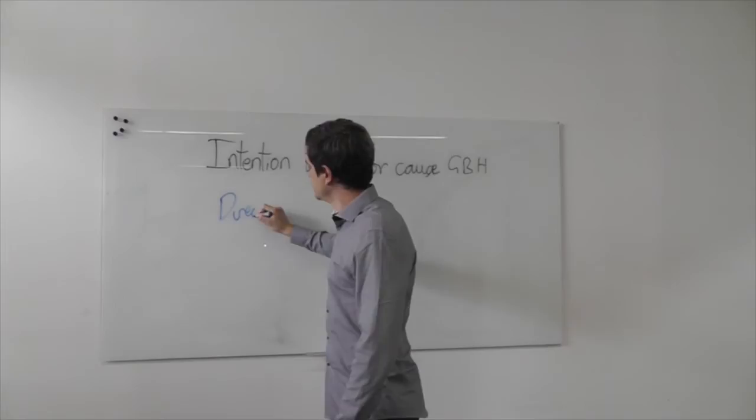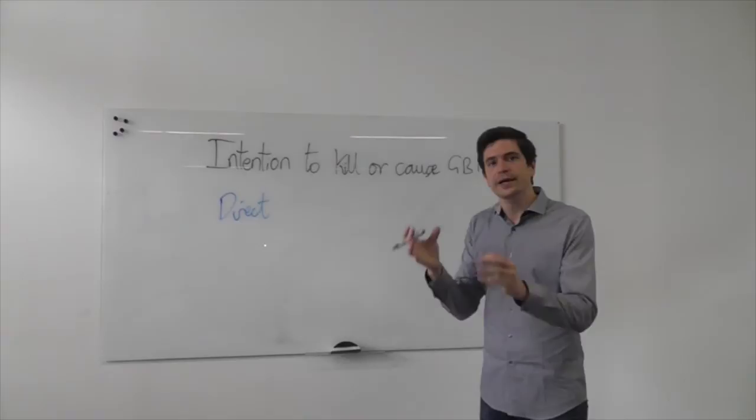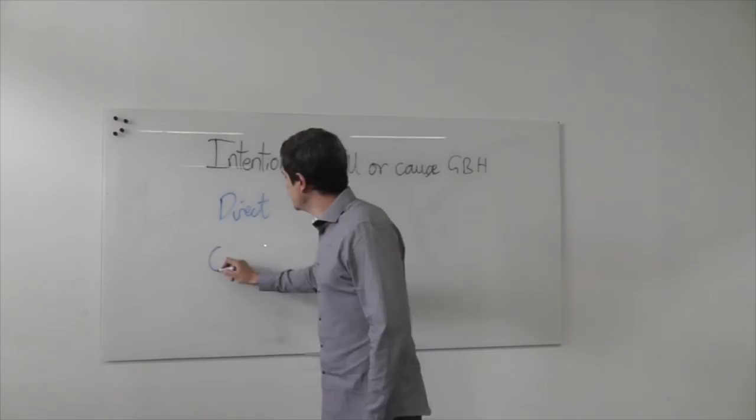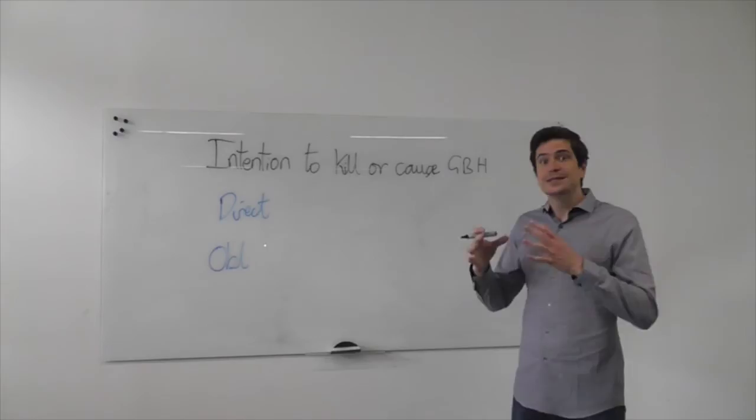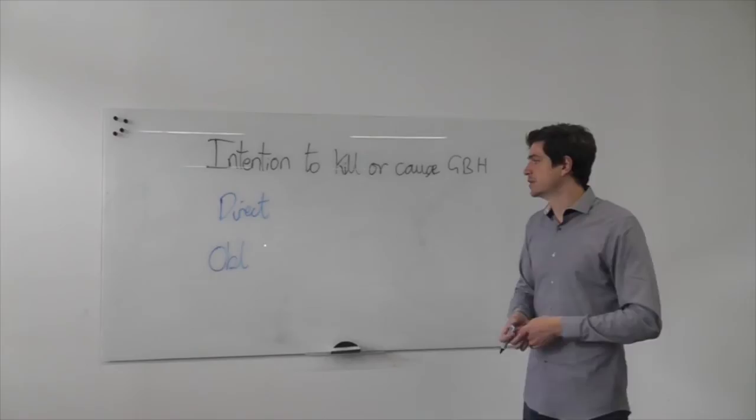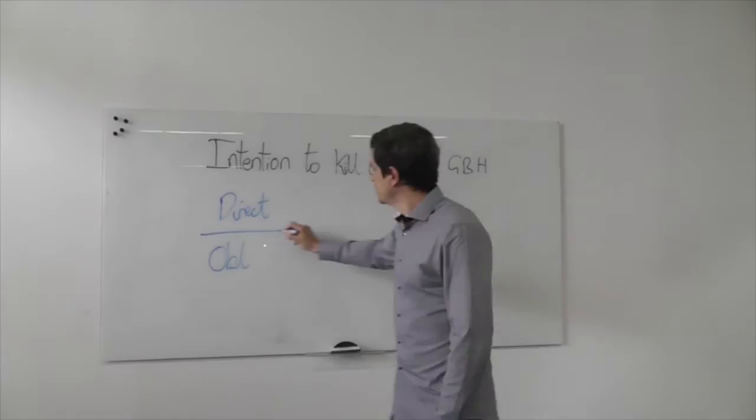The most obvious one is a direct intention. A direct intention is where the defendant acts with the aim or purpose or desire to bring about a certain result or circumstance. The other is oblique. An oblique intention is where the defendant foresees as a virtual certainty a particular result will come about, and the jury choose to find an intention.